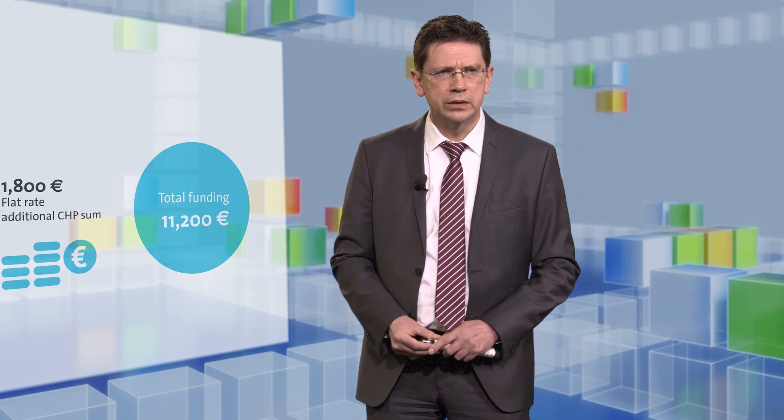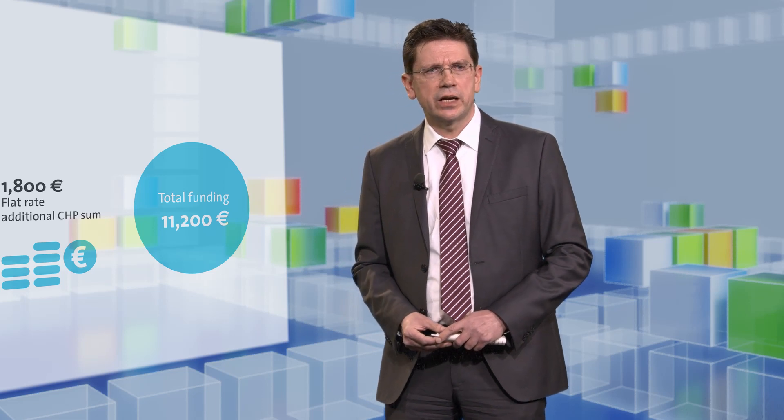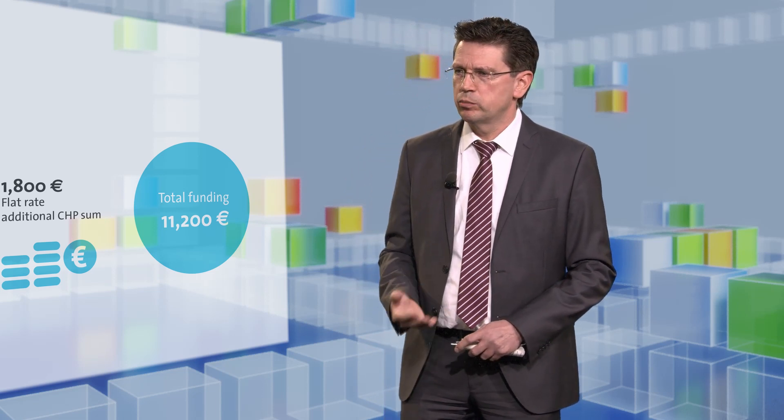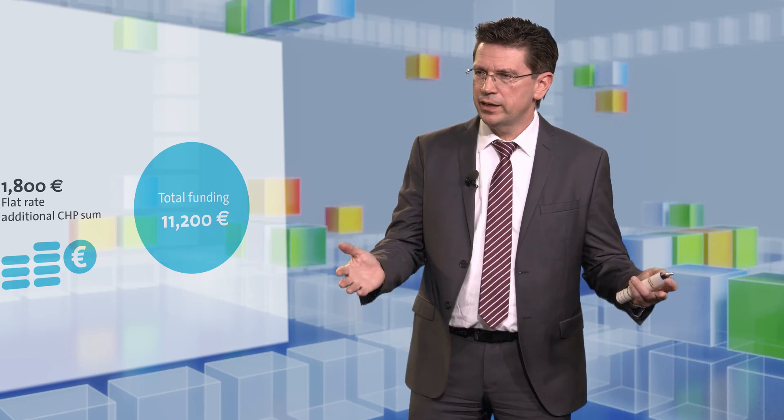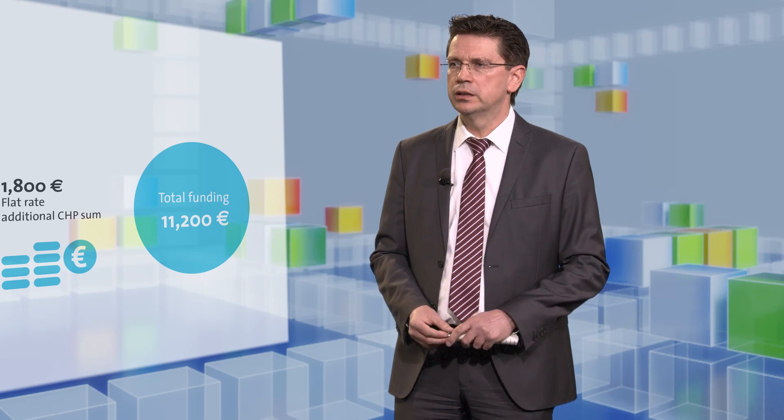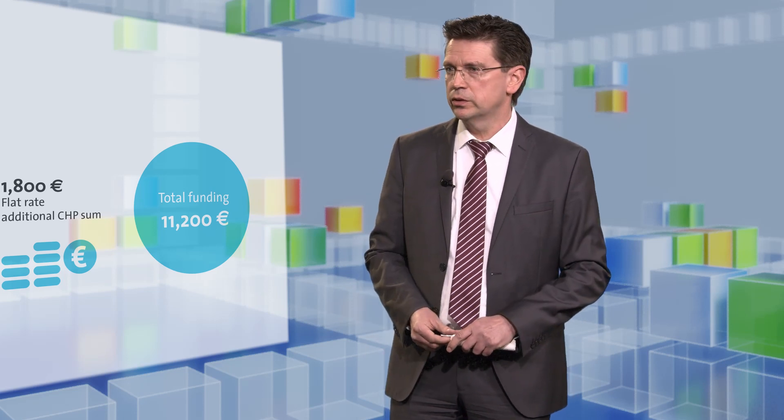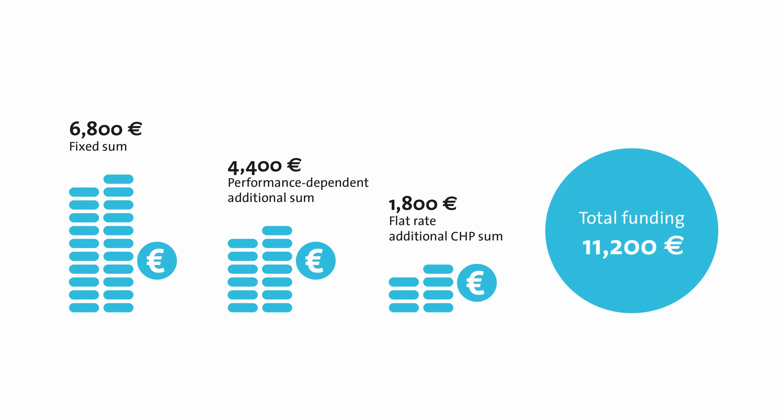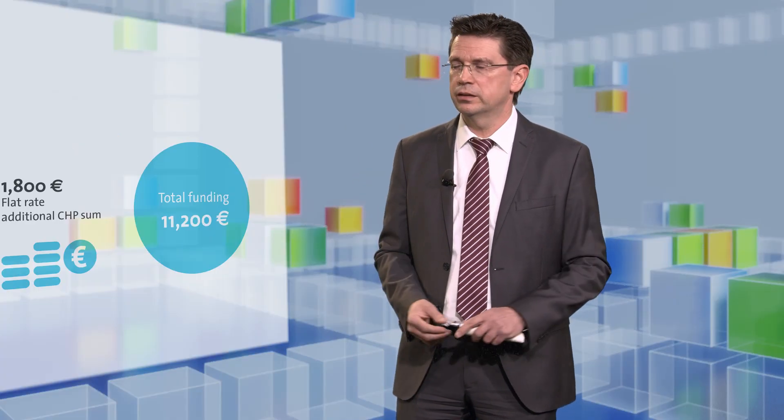In February of this year, KFW program 433 was revised. This is very positive because in the past you had to submit two funding applications to get the maximum funding. Today the end customer has to submit only one application. The allocated subsidy is divided into a basic amount for the system and an amount dependent on the electrical output that's produced. If you look at a typical system on the market with 750 watts of electricity output, which is relatively common, the end customer actually gets more than before and saves one application form, so that's very positive.